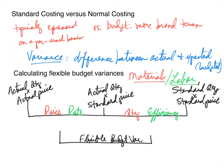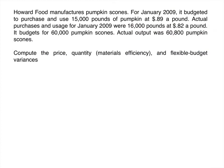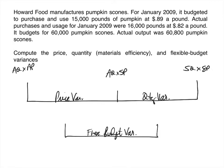Let's look at an example. Howard Food manufactures pumpkin scones. For January, they budgeted to purchase and use 15,000 pounds of pumpkin at 89 cents a pound. Actual purchases and usage for January were 16,000 pounds at 82 cents a pound. Budgeted output was 60,000 scones; actual output was 60,800 scones. We need to compute the price and quantity variances for materials and the flexible budget variance. Draw your chart and label everything first.